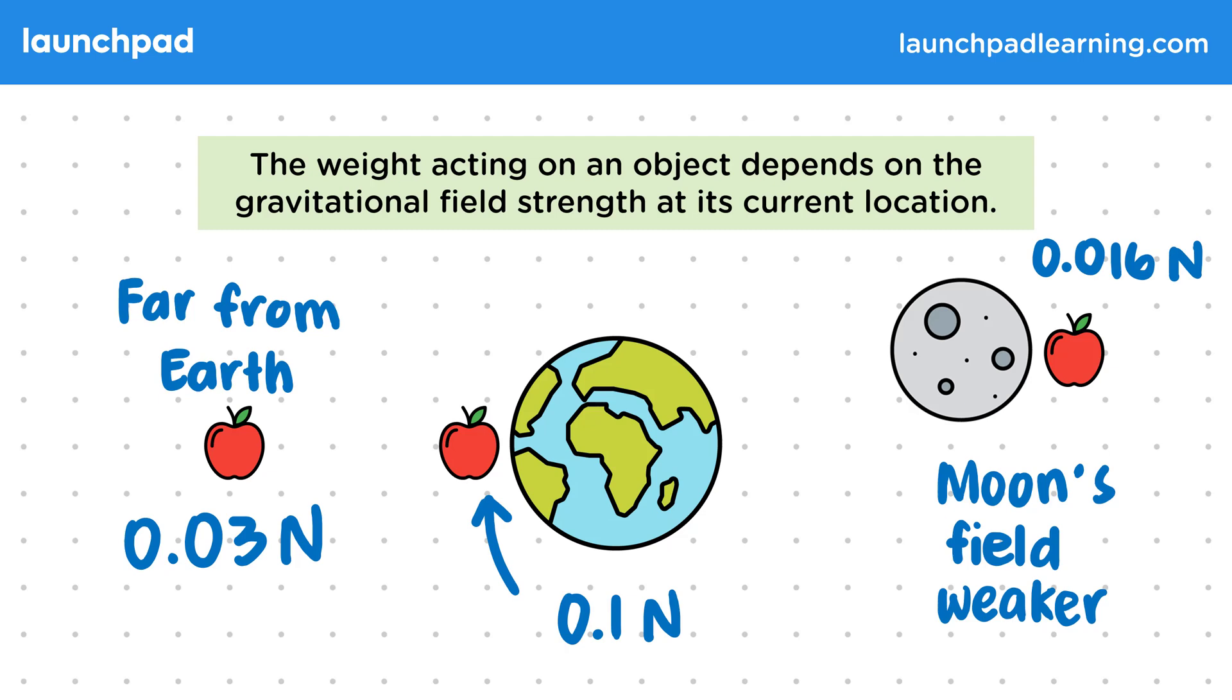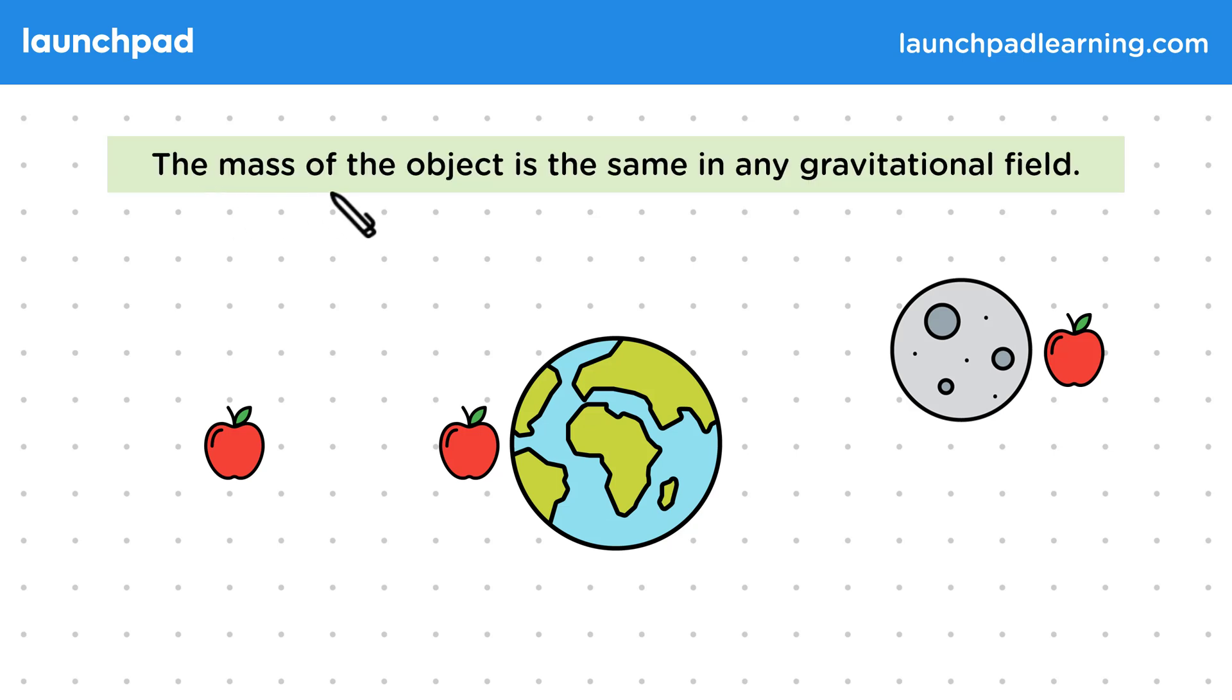So does the mass of the apple also change? The mass of the object is the same in any gravitational field, so the apple has the same mass at all locations. This is why mass and weight are not the same. Make sure you understand this point as you may be asked to explain this in your exams.